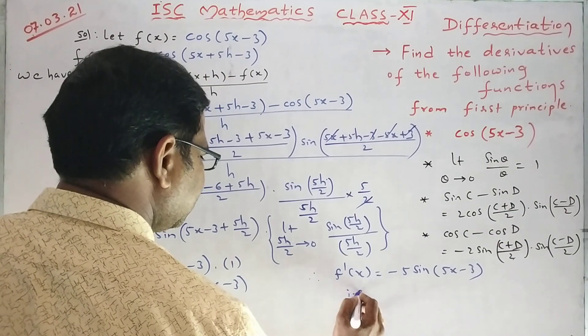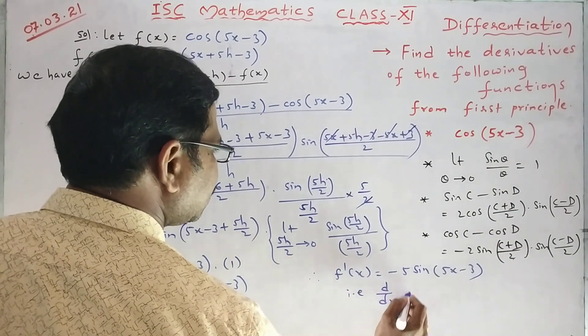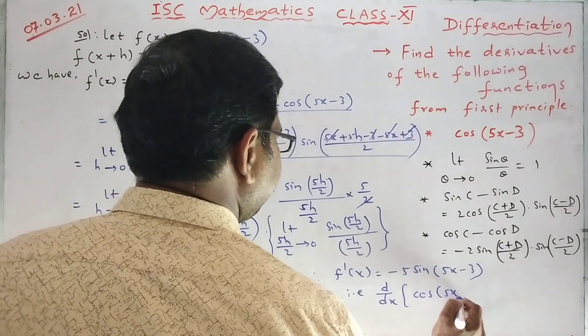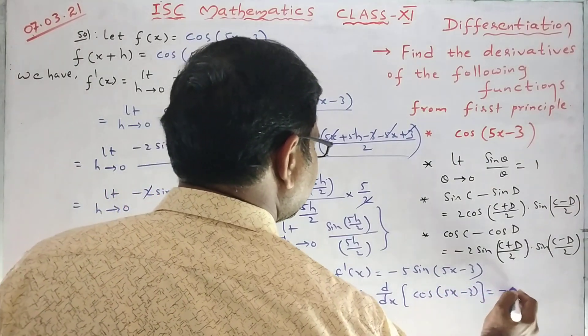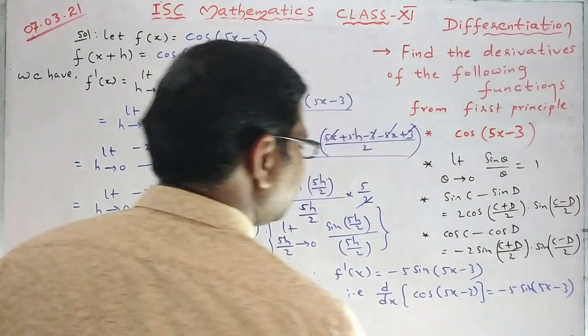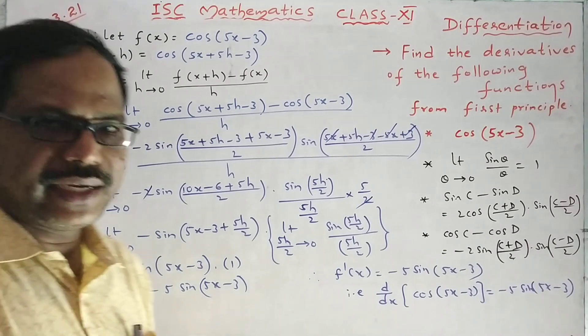That is, d by dx of cos 5x minus 3 is minus 5 sin 5x minus 3. Hope it is clear. Thank you.